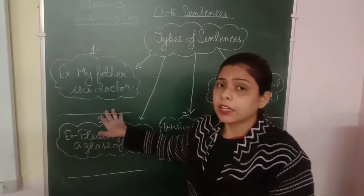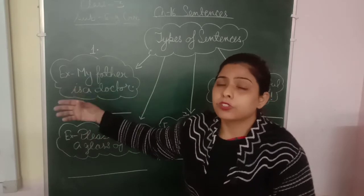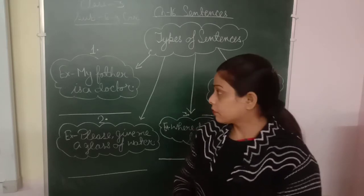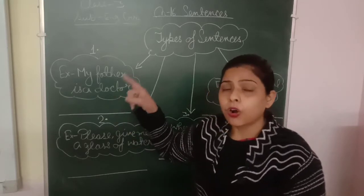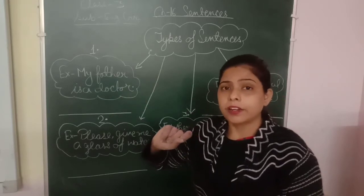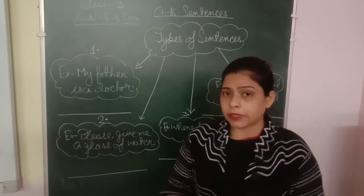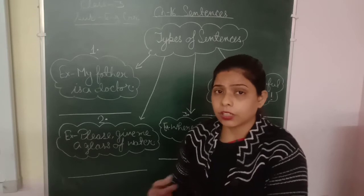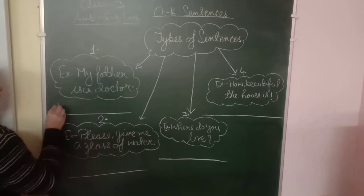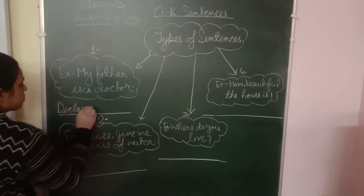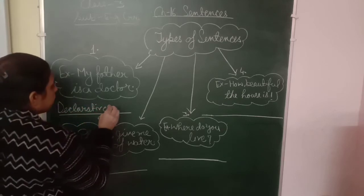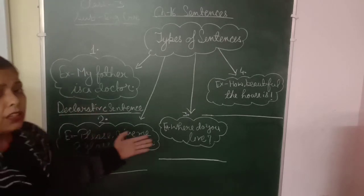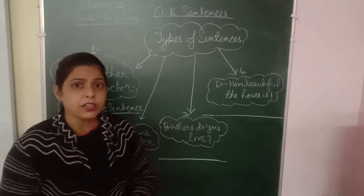In this sentence, something is being declared. So when a sentence makes a statement or declares something, that is called a declarative sentence. The first type of sentence is declarative sentence — it tells us any statement or declares something.